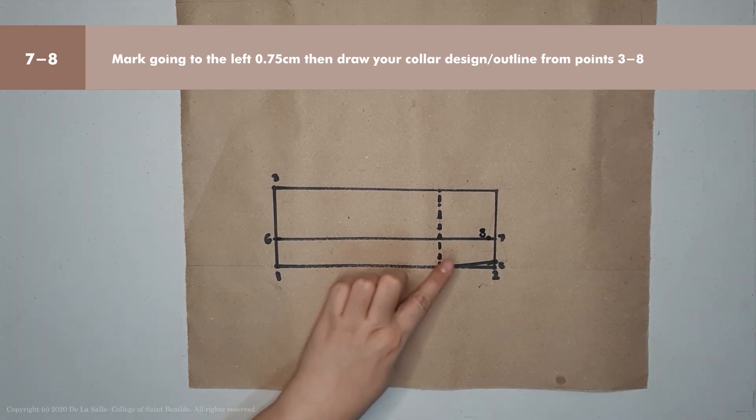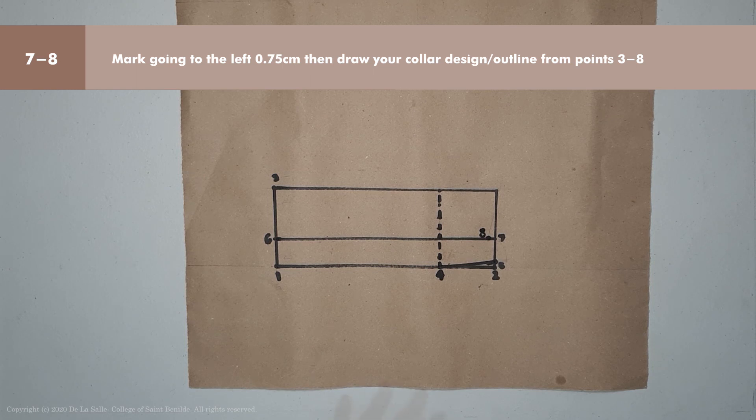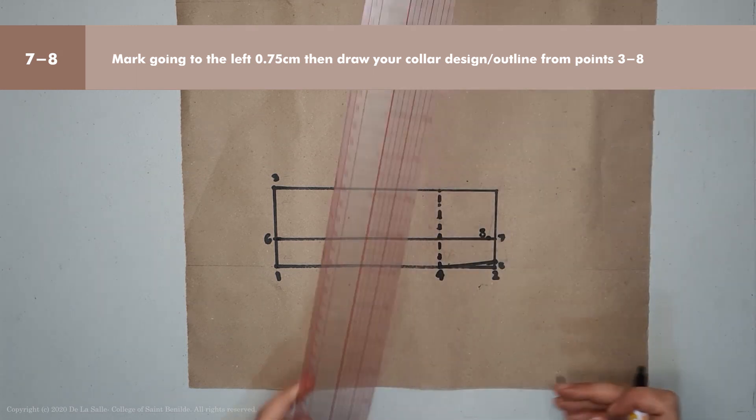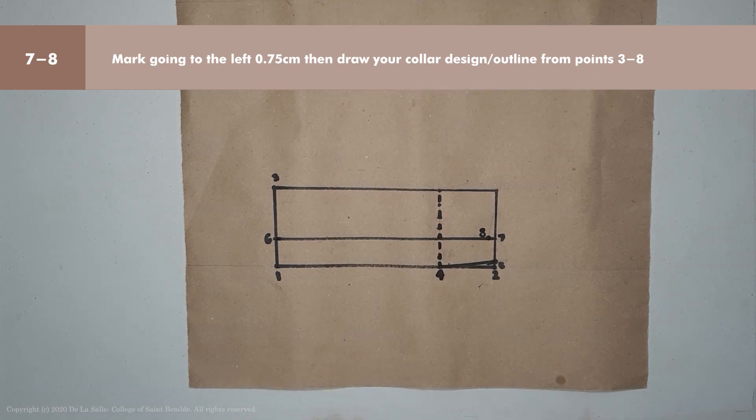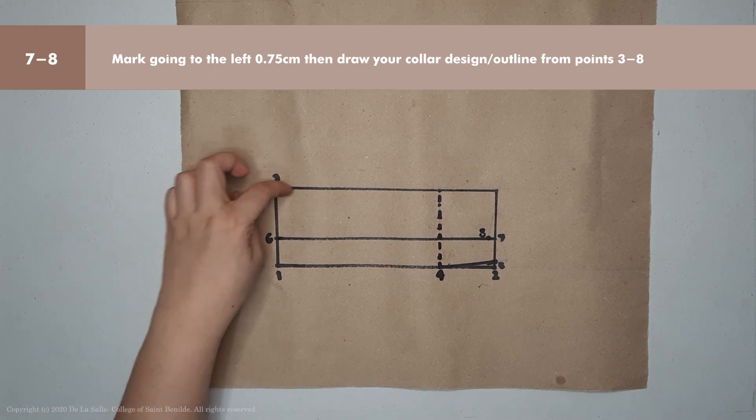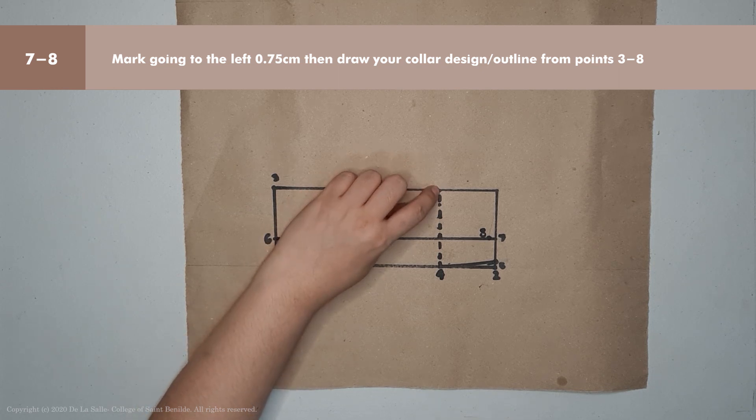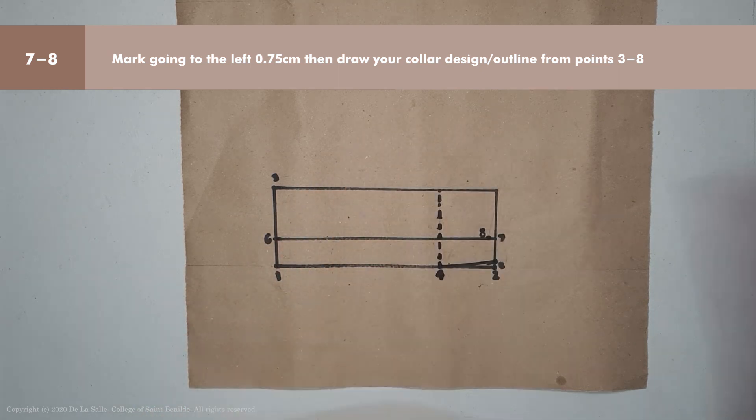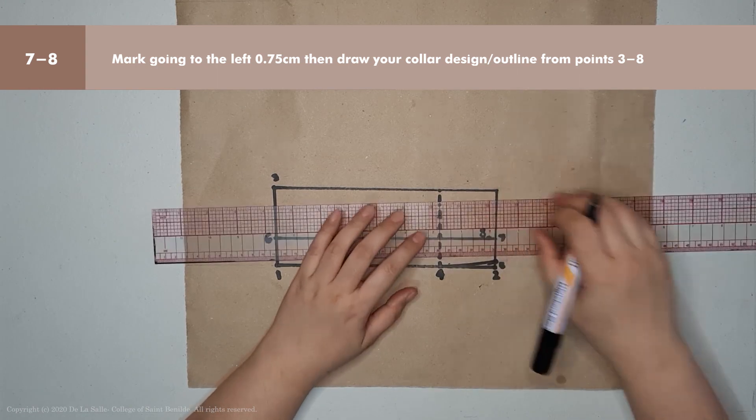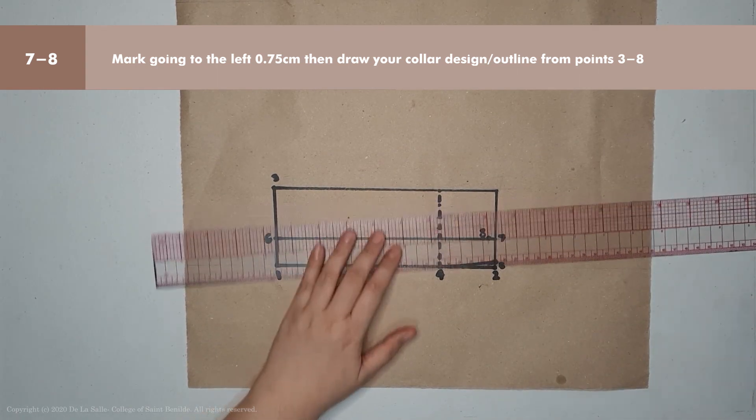From this point, you're going to draw the outline or design of your collar. The best way to do it is to connect points 3 to 8. This is the base of your collar. From point 4 on the top part, connect it to 8 by designing your collar. You can use a straight ruler or a curved ruler.